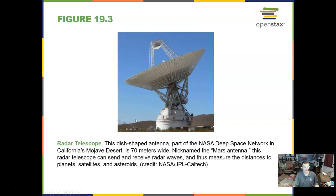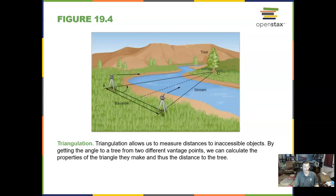A radar telescope in California part of NASA's Deep Space Network. We can use triangulation to determine distances to objects you can't otherwise reach.